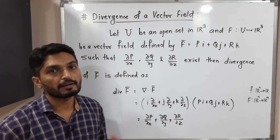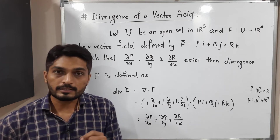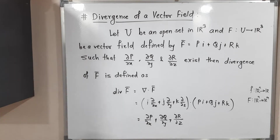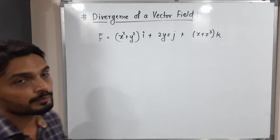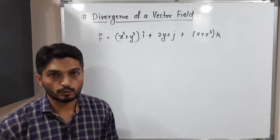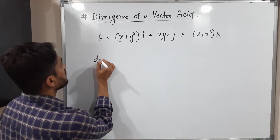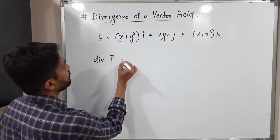This summation gives us the divergence of F̄. Let us now discuss an example. Consider the vector field F̄ given below. Let us find its divergence — that is, div F̄ = ∇ · F̄.